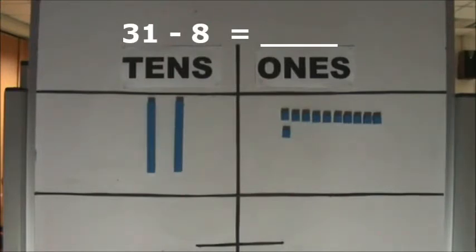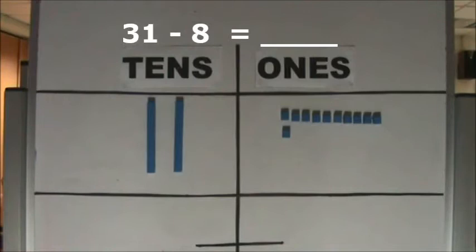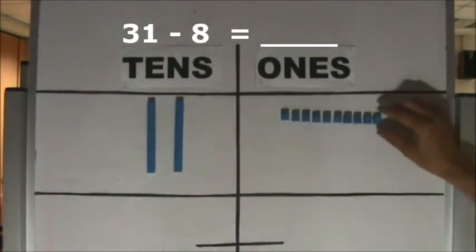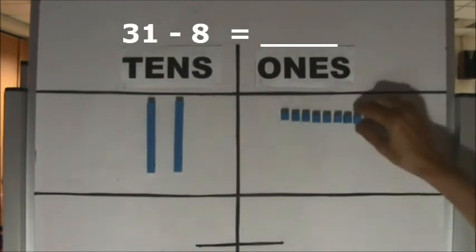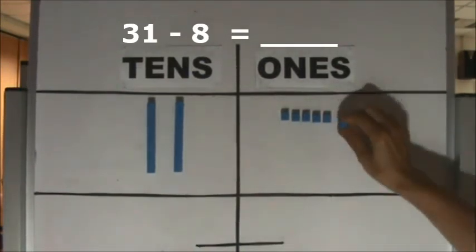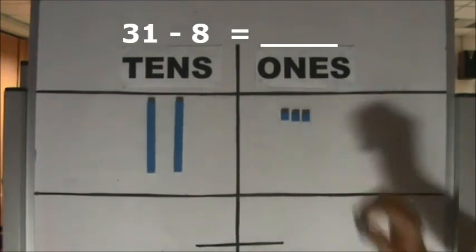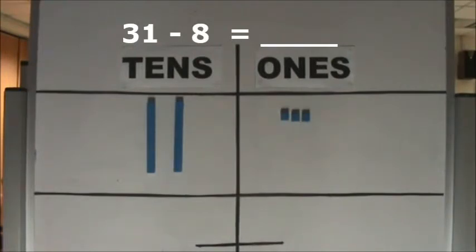Now we have enough ones to take away 8 ones. Take away 8 ones from 11 ones — take away 1, 2, 3, 4, 5, 6, 7, 8. How many ones do we have left? We have 3 ones left.